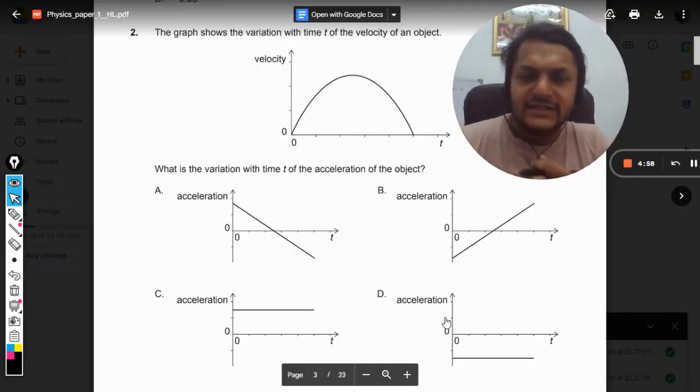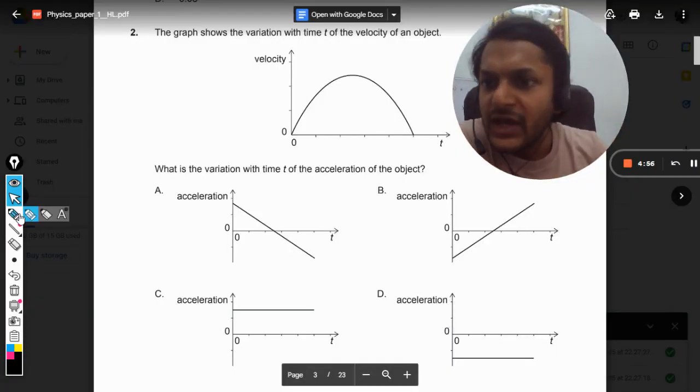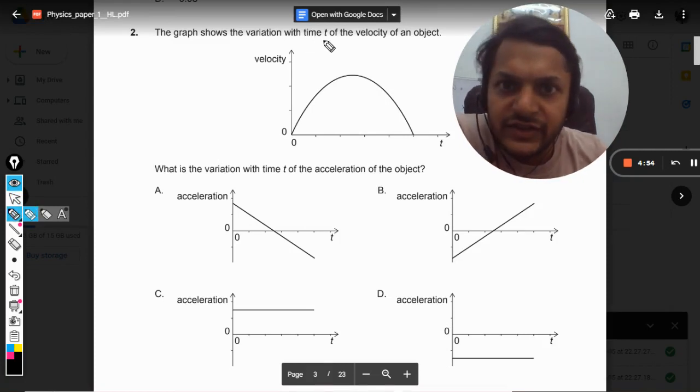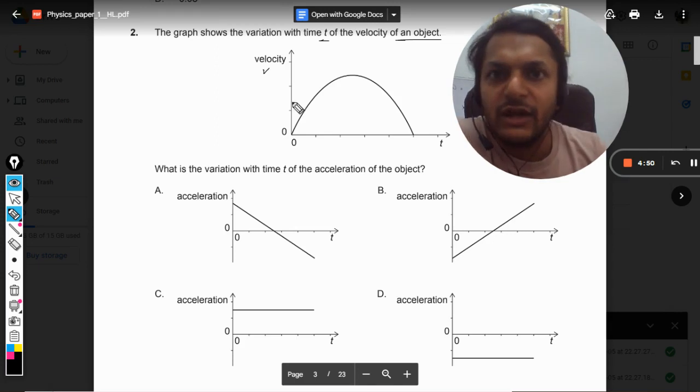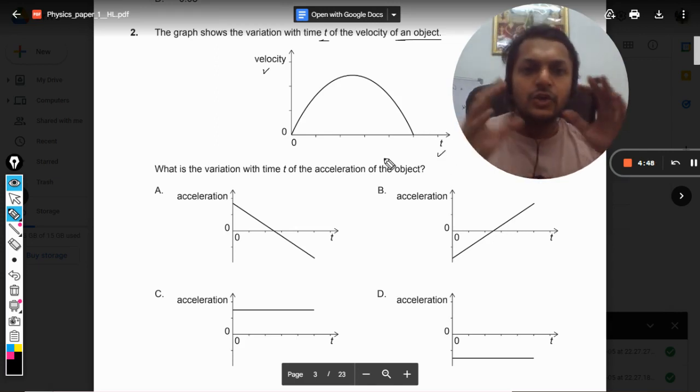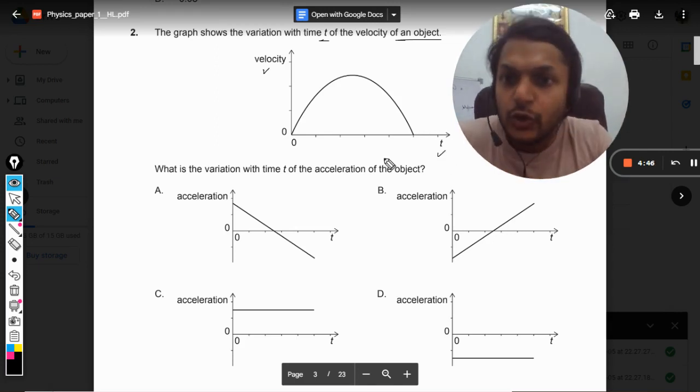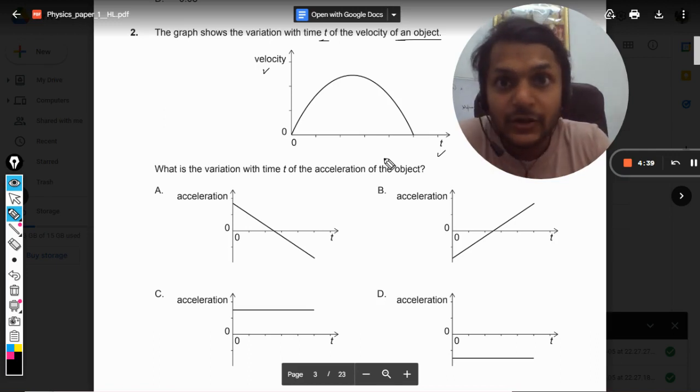Okay dear students, let's see what is there in this question. The graph shows the variation with time t of the velocity of an object. On the y-axis you have velocity and on the x-axis you have time. The graph is given to you. What will be the variation with time t of the acceleration of the object?